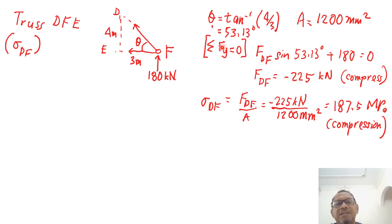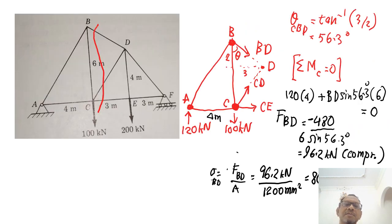So then when I use my, when applying my force equilibrium here, summation of force in the y direction equals to 0. So Fdf sin 53.13, which is the vertical component, plus 180 equals to 0. And then I get my Fdf equals to minus 225 kilonewton. So when it's negative, it shows that my assumption that it is going outward is not correct. So it is a compression. So sigma DF equals to Fdf over A. 225 kilonewton divided by 1200 mm square. So it is 187.5 megapascal. It is in compression.